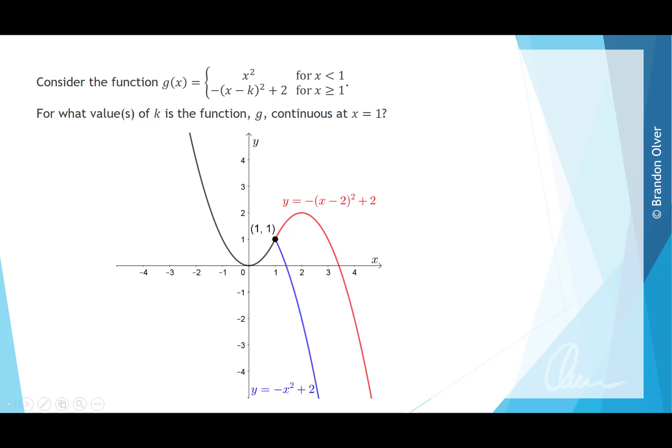On this slide we've graphed the two cases for different values of k. For the blue graph if k equals 0, we have the rule y equals negative x squared plus 2, which is continuous at the point 1, 1. For the red graph if k equals 2, we have the rule y equals negative x minus 2 all squared plus 2, which is also continuous at x equals 1.